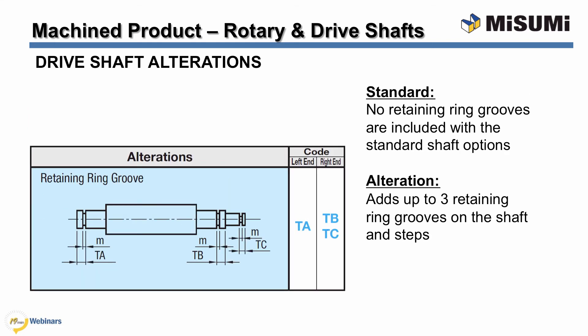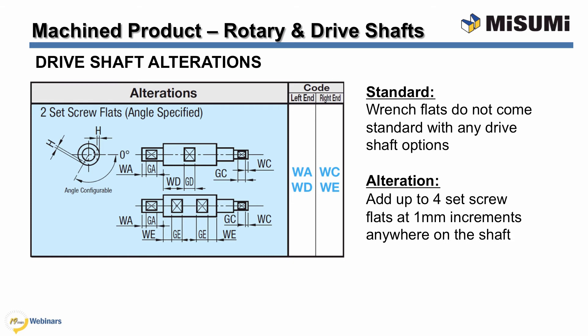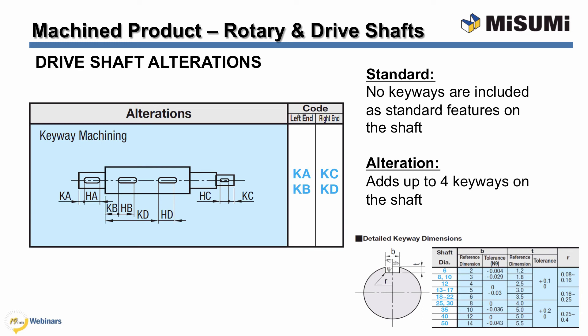Retaining ring grooves can also be added to drive shafts. Just like rotary shafts, the location of the grooves can be configured in 1 millimeter increments, but the width is predetermined based on shaft diameter. Drive shafts have the option to add up to four flats at any designated part of the shaft, with a second flat at the same location in 30 degree increments. Flat location and width are configurable in 1 millimeter increments. Drive shafts can allow up to four keyways, whereas rotary shafts can only have two, and keyway location and length are configurable in 1 millimeter increments. The keyway dimensions follow the same dimensional criteria as rotary shafts.